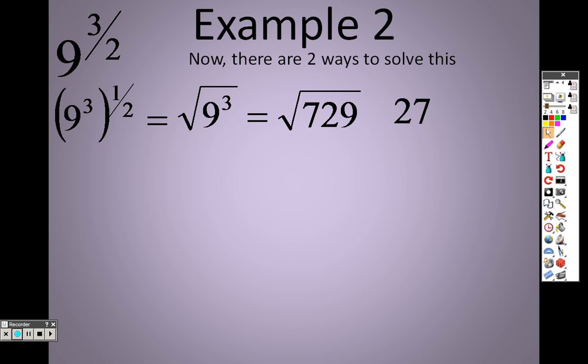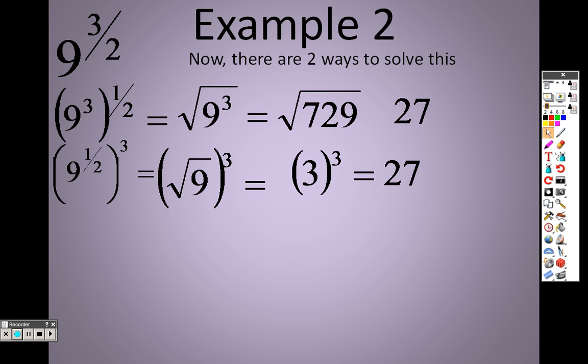The point is, this is why rewriting them can be very crucial and important, and sometimes be easier to help you solve the problems in your head. But if we would have rewritten this problem as 9 to the 1 half to the 3rd, 1 half is the same as saying the square root. So really it's saying the square root of 9 to the 3rd. Well, the square root of 9 is 3. So really I'm saying 3 to the 3rd, which is like saying 3 times 3 times 3, which is 27. All of which can be done in your head.